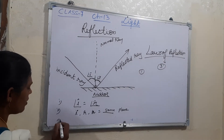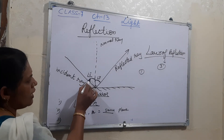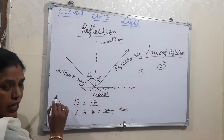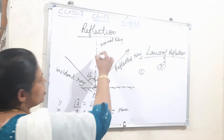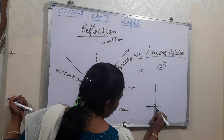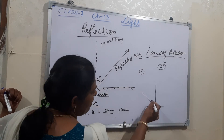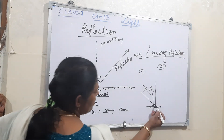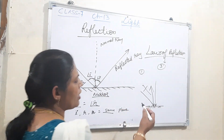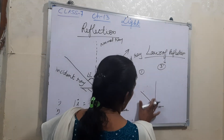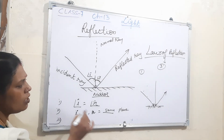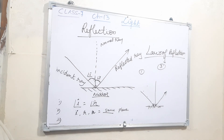The third law says that the incident ray and the reflected ray are always on different sides of the normal. If the incident ray comes on the left side of the normal, then the reflected ray should be on the right side. They will never come on the same side of the normal.